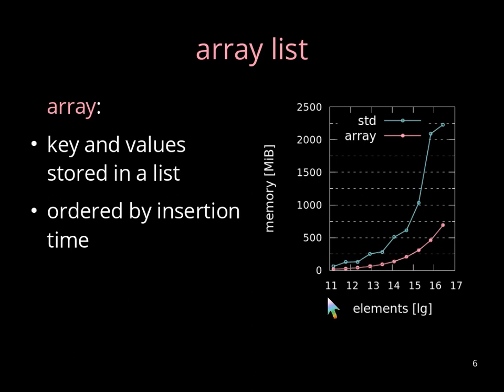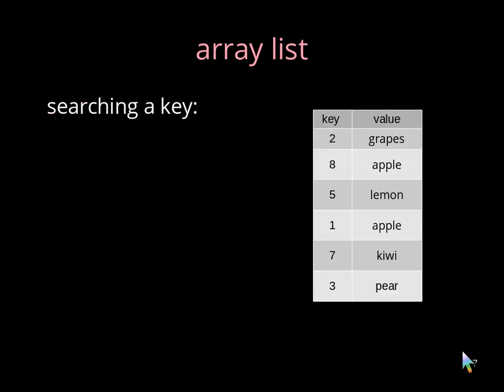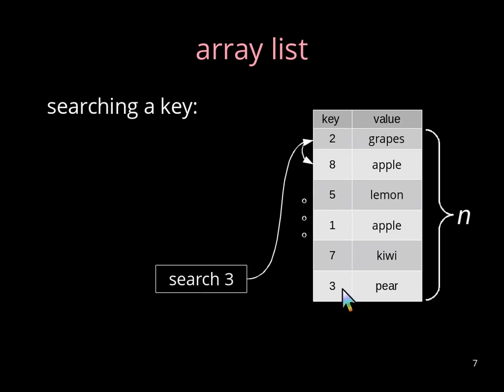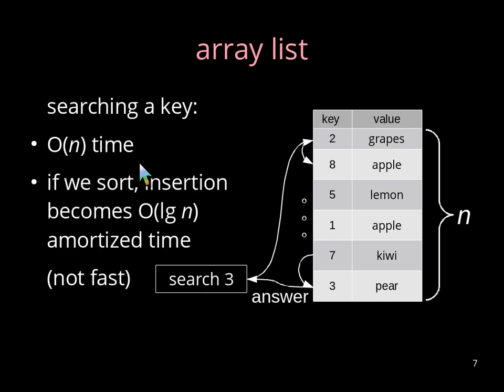Now, can we do better? Another very simple approach is to use array lists, where this array list stores keys and values in order of their insertion time. And you can see already here this huge gap of the memory footprint. However, the main problem now becomes the running time. For instance, if we search a key like 3, we scan the array list downwards until we find the 3, which is in this case after n steps, so we took order of n time. We can improve this time by sorting the array list, but then the insertion and the lookup becomes order of log n amortized time.